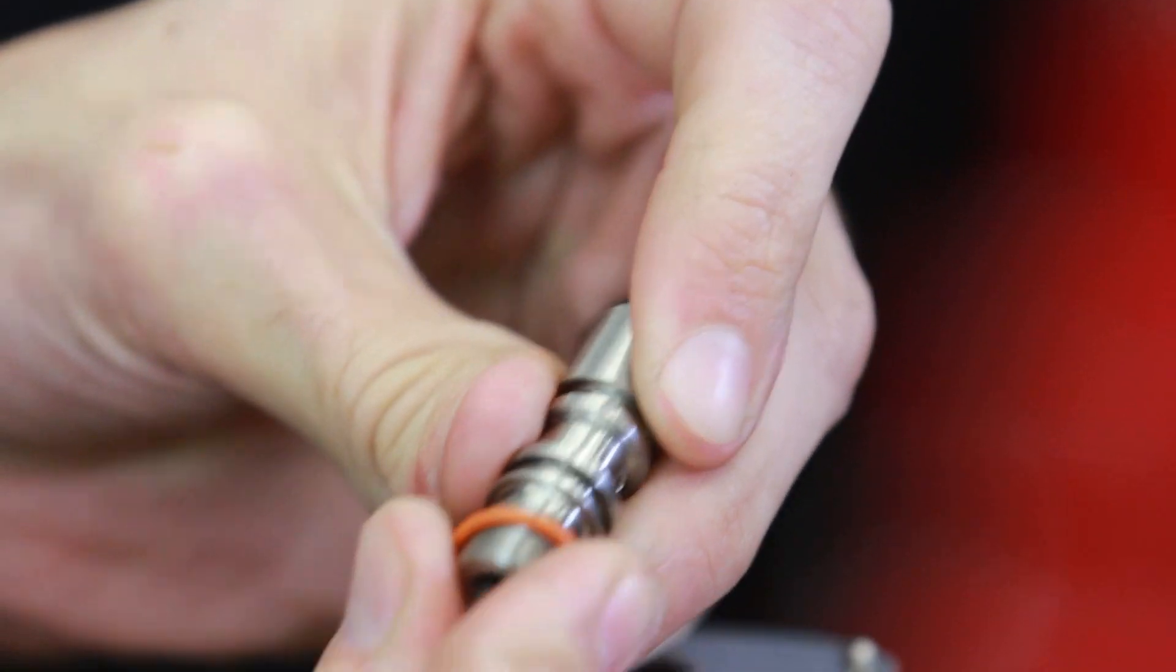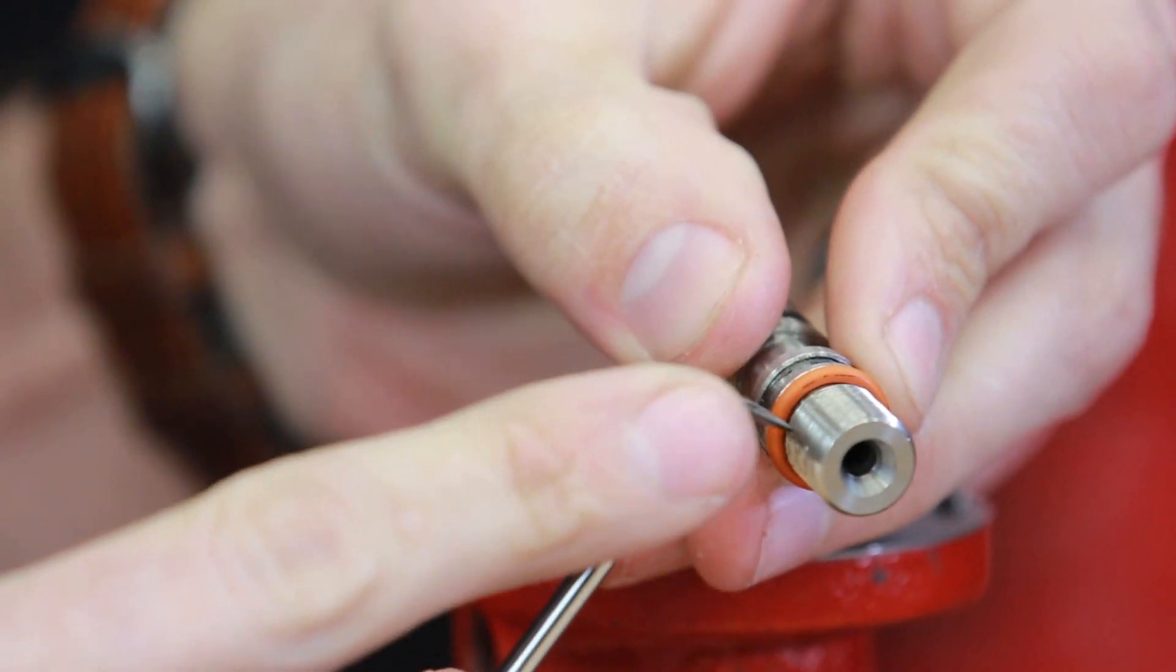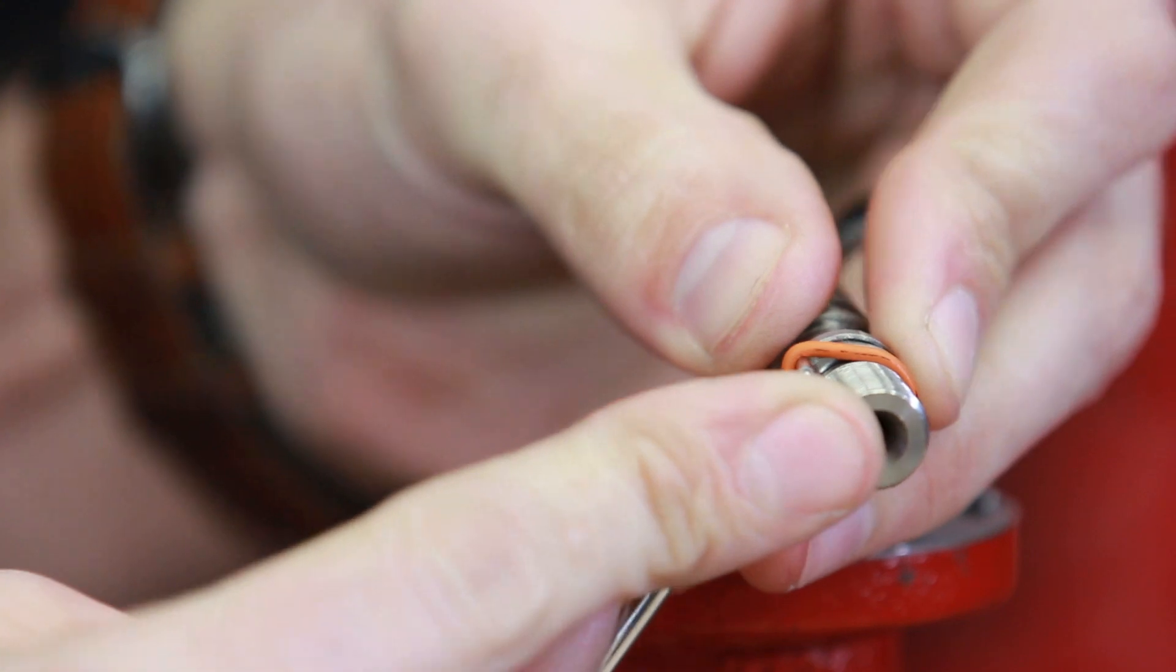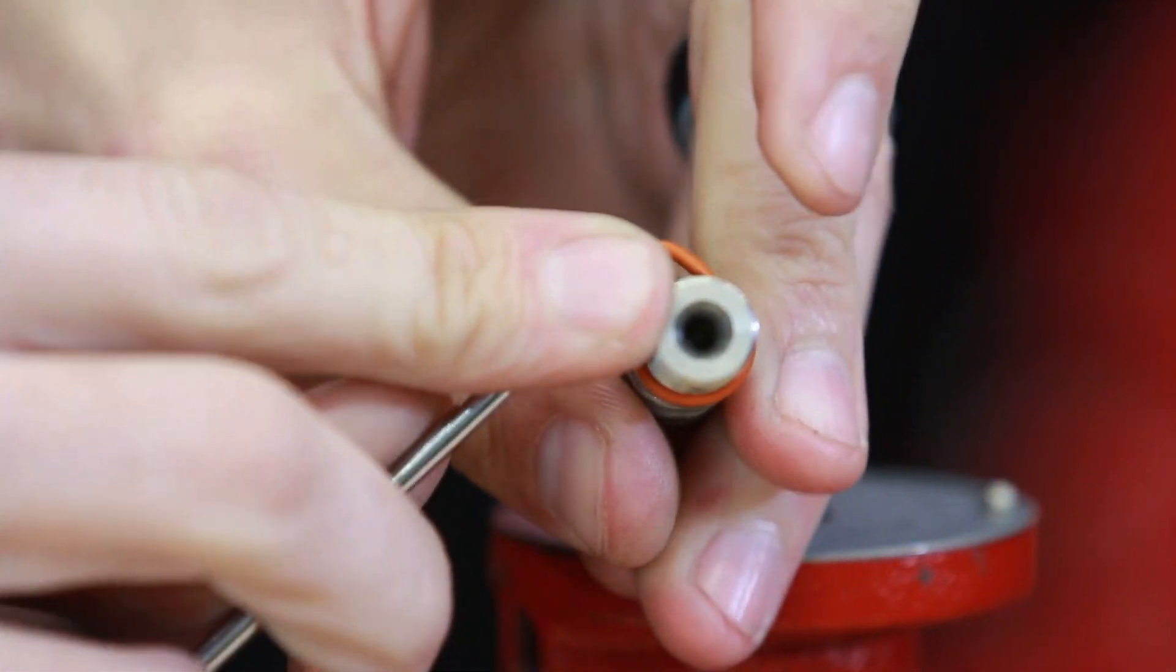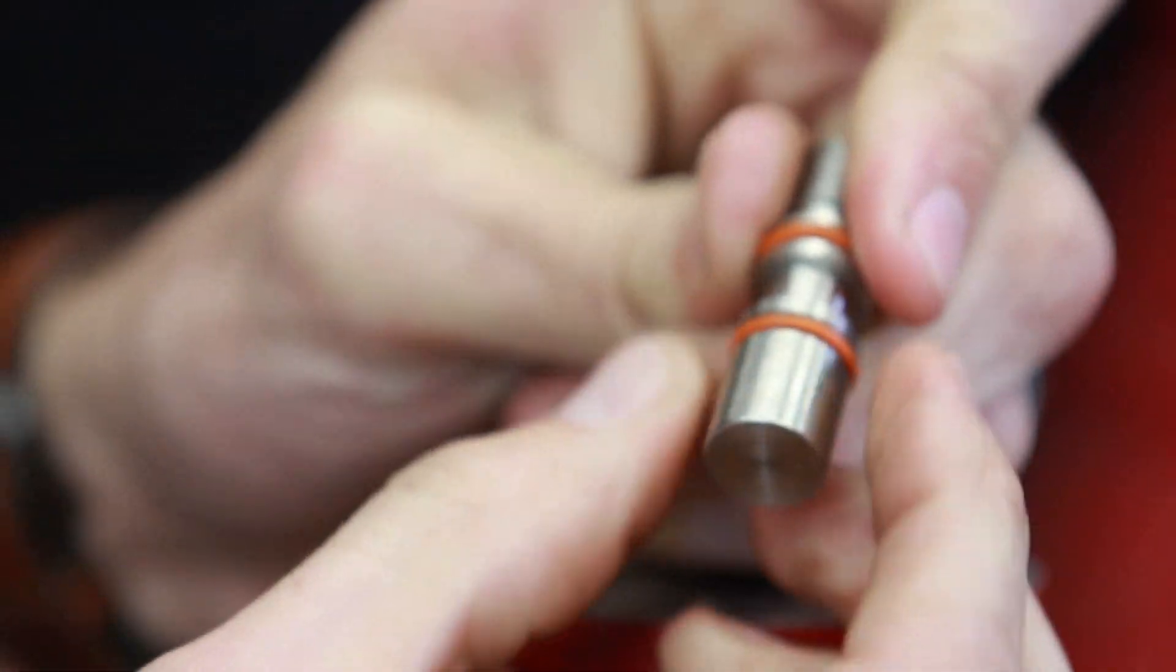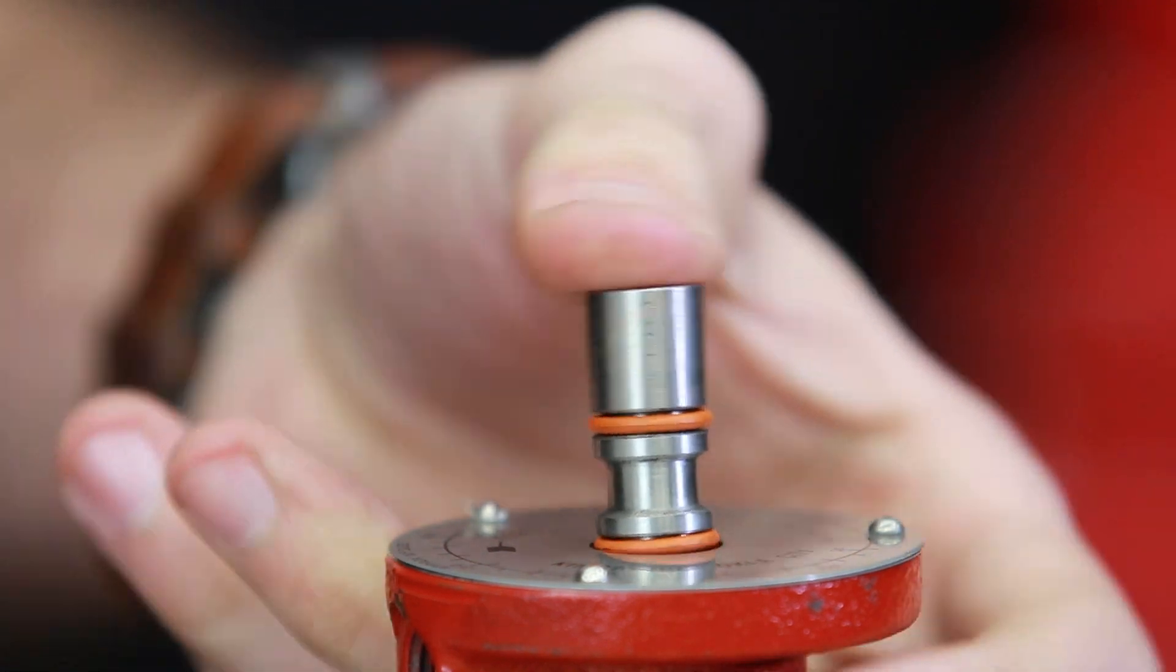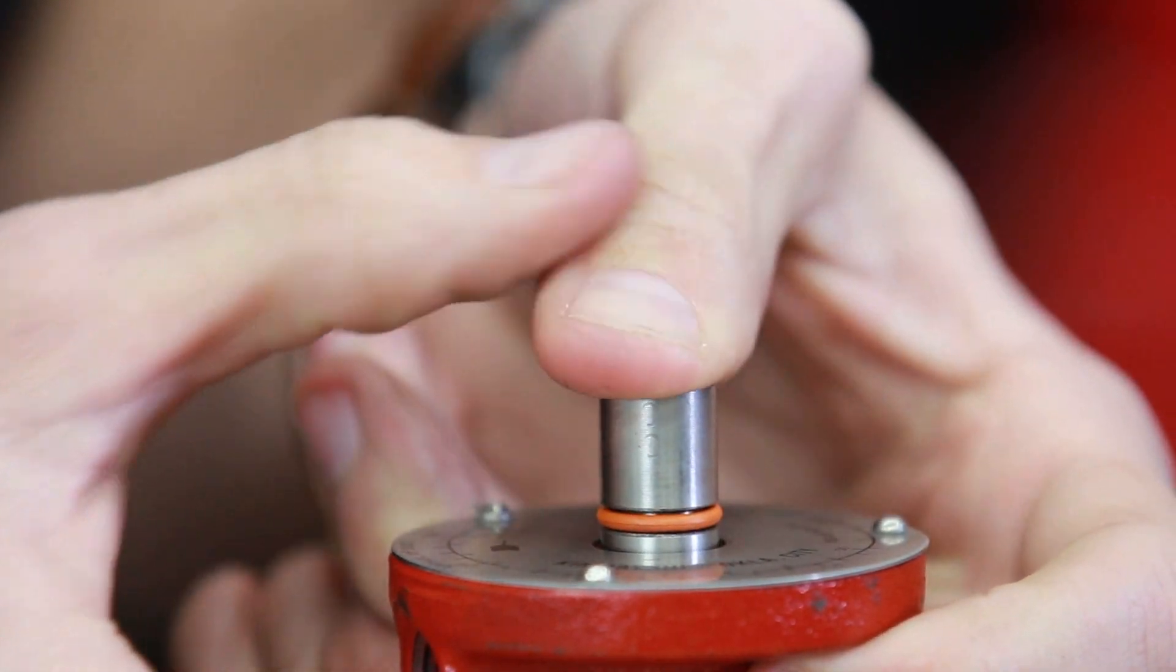Install two O-rings on the seat. Insert the seat into the bonnet, threads down, using light pressure and a rotating motion.